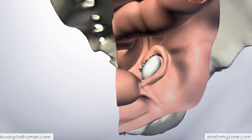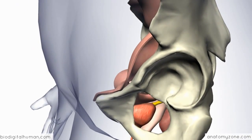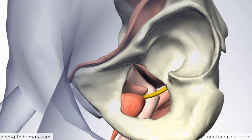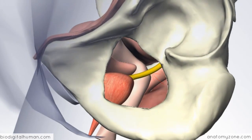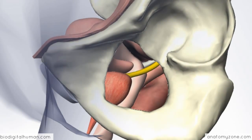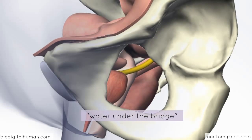If I rotate the model, you can see that deep to this ligament, the ureters come underneath it to pass into the bladder. Above the ureters, you have the uterine arteries carried in the broad ligament. A way to remember this relationship is the mnemonic 'water under the bridge': the water carried in the ureter is under the bridge, and the bridge is the uterine artery.